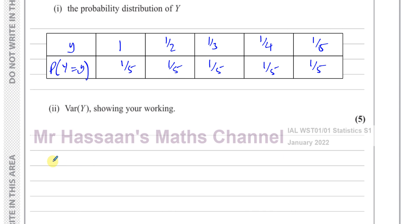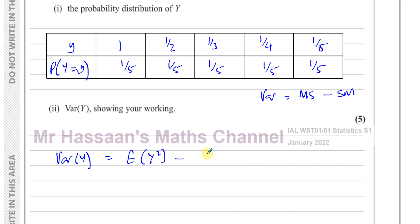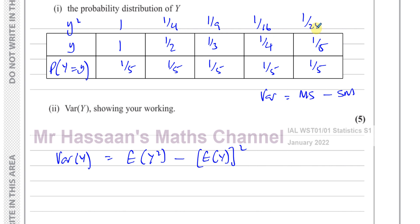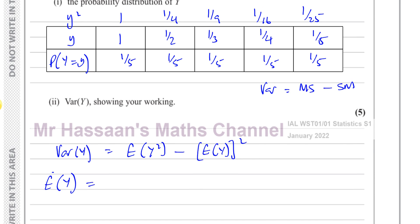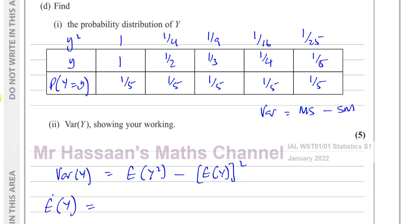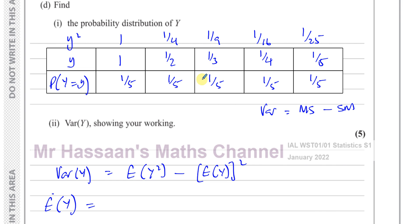Part D part two: find the variance of Y. The variance is the mean of the squares minus the square of the mean — E(Y²) minus [E(Y)]². The squared Y values are: 1, one-quarter, one-ninth, one-sixteenth, and one over twenty-five. Let's find E(Y) first. Initially it might seem E(Y) equals one-third as the middle value, but that's only true for consecutive integers.